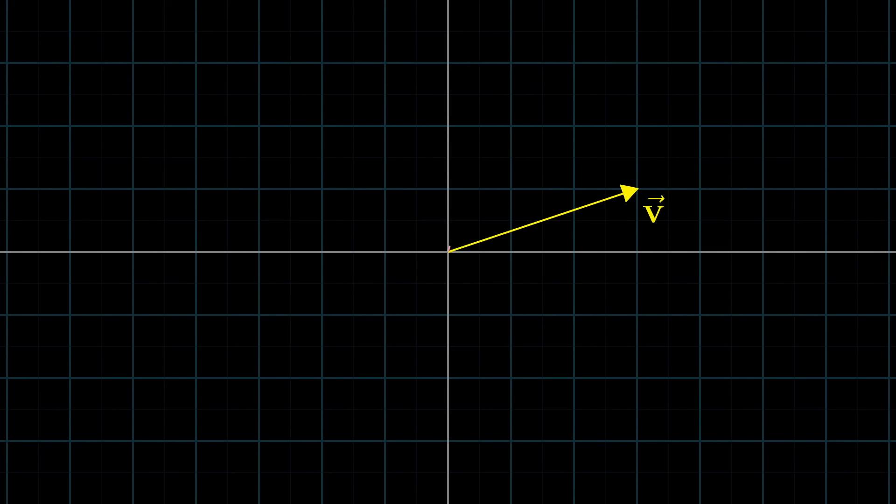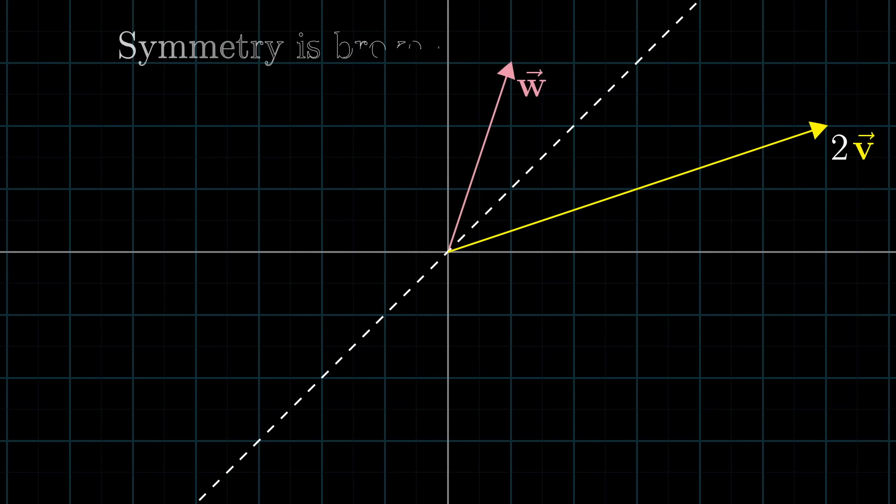Here's the intuition for why order doesn't matter. If v and w happened to have the same length, we could leverage some symmetry. Since projecting w onto v, then multiplying the length of that projection by the length of v, is a complete mirror image of projecting v onto w, then multiplying the length of that projection by the length of w. Now, if you scale one of them, say v, by some constant like 2, so that they don't have equal length, the symmetry is broken.